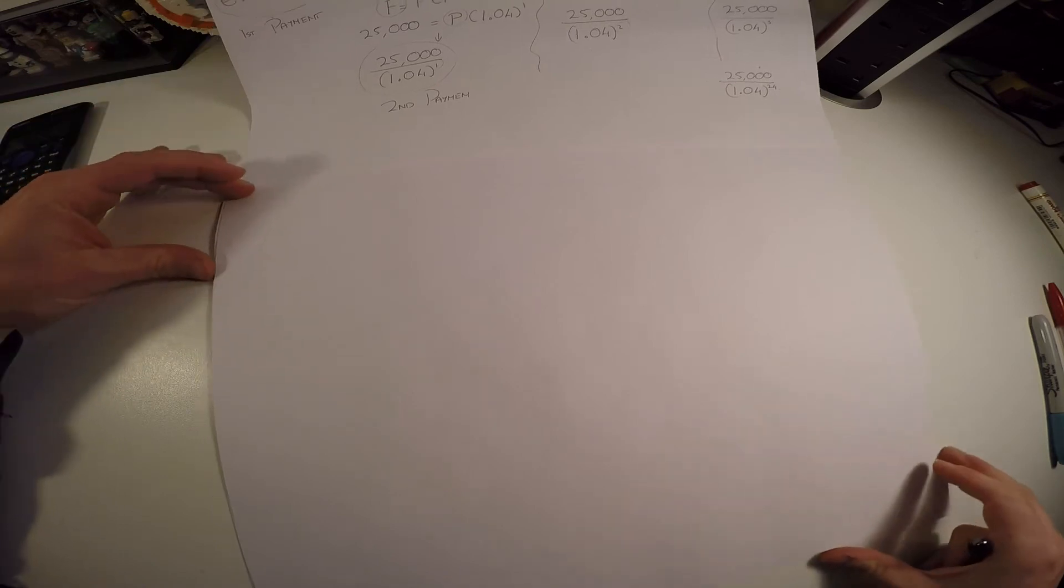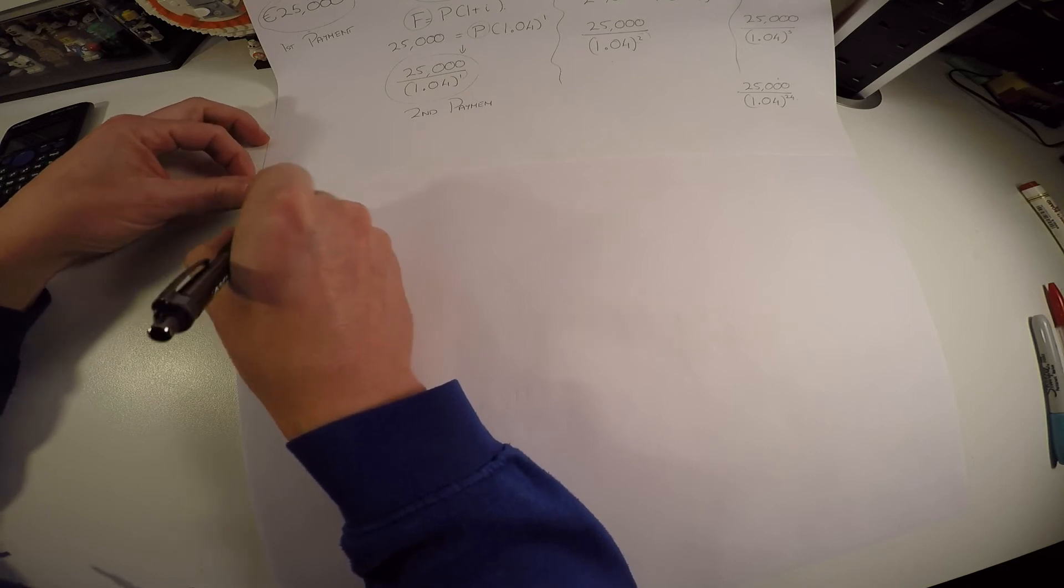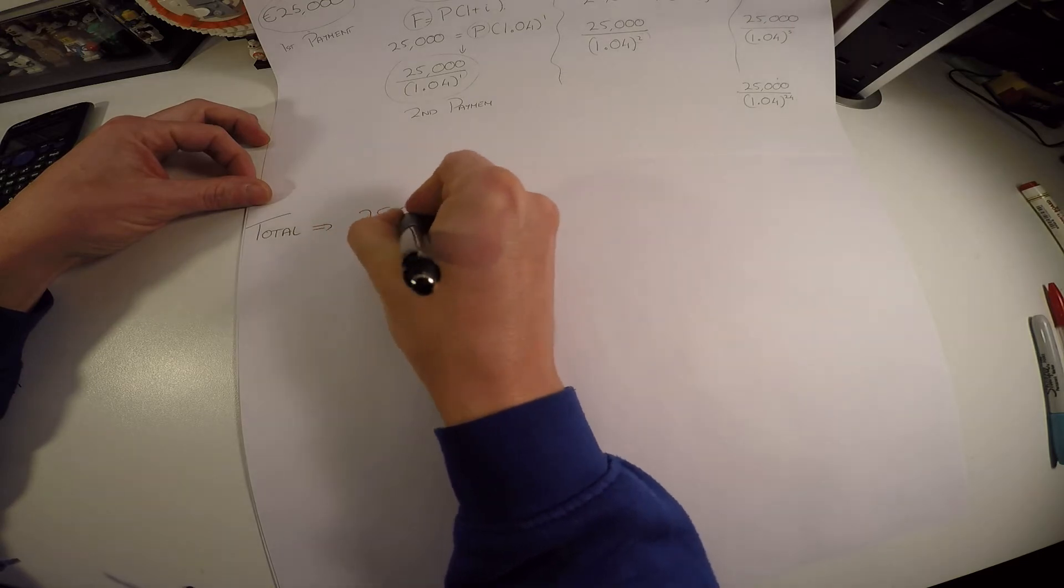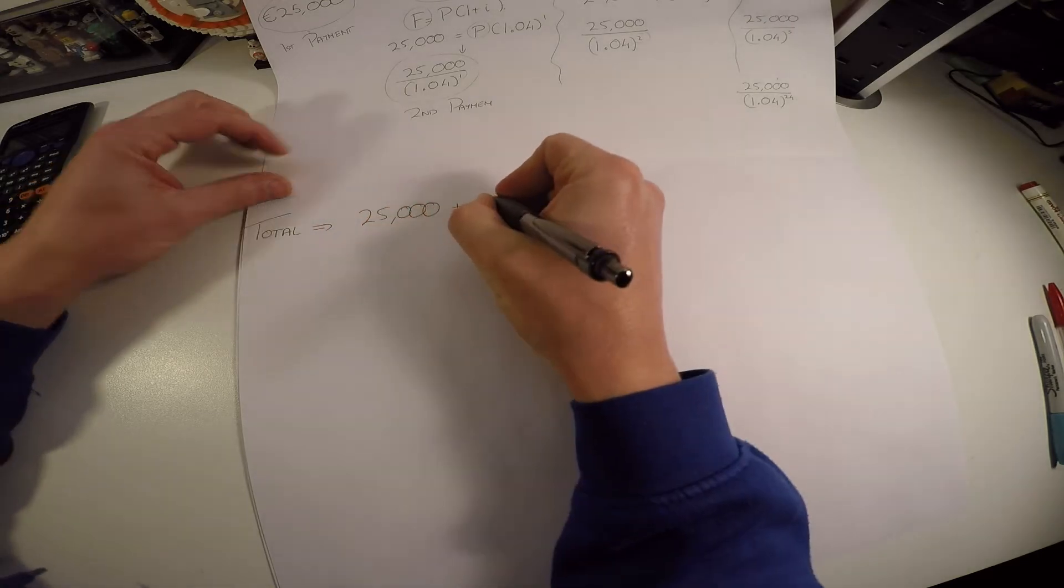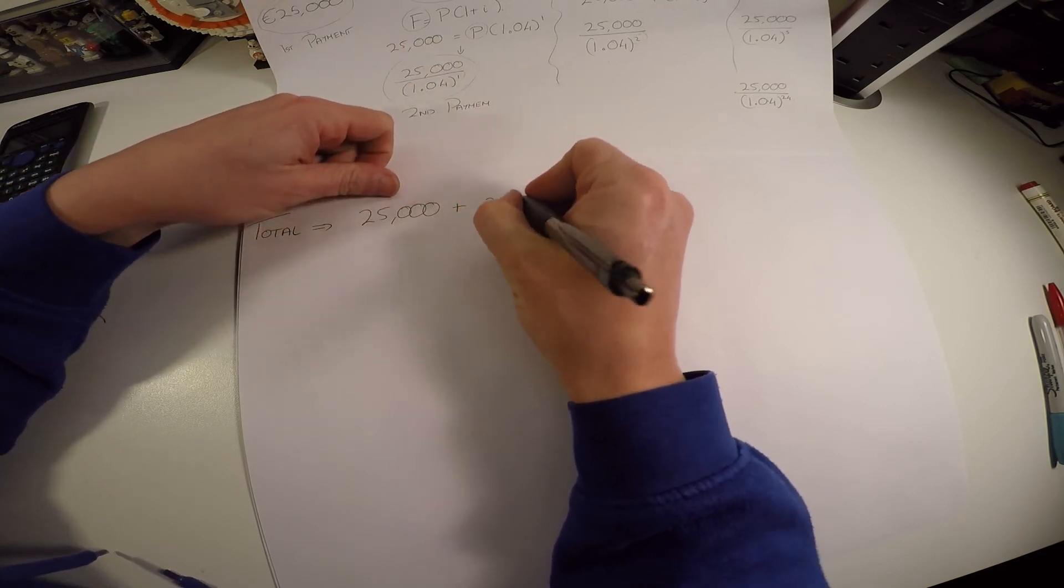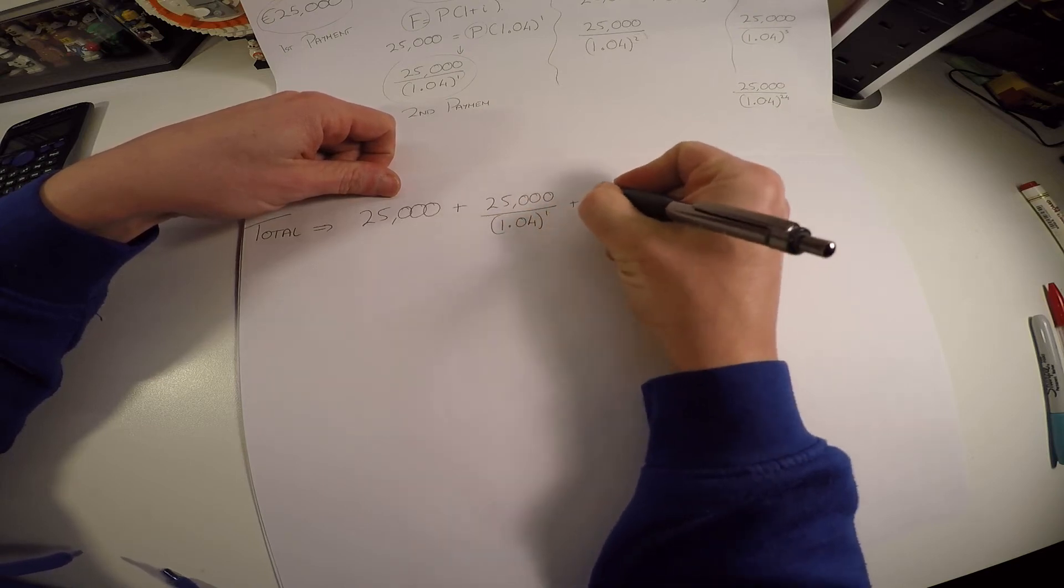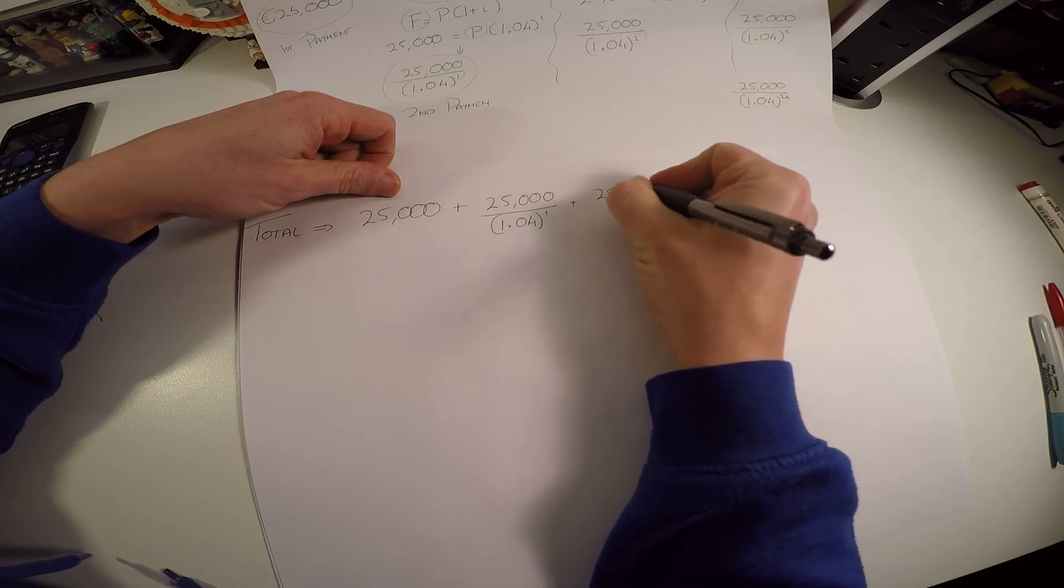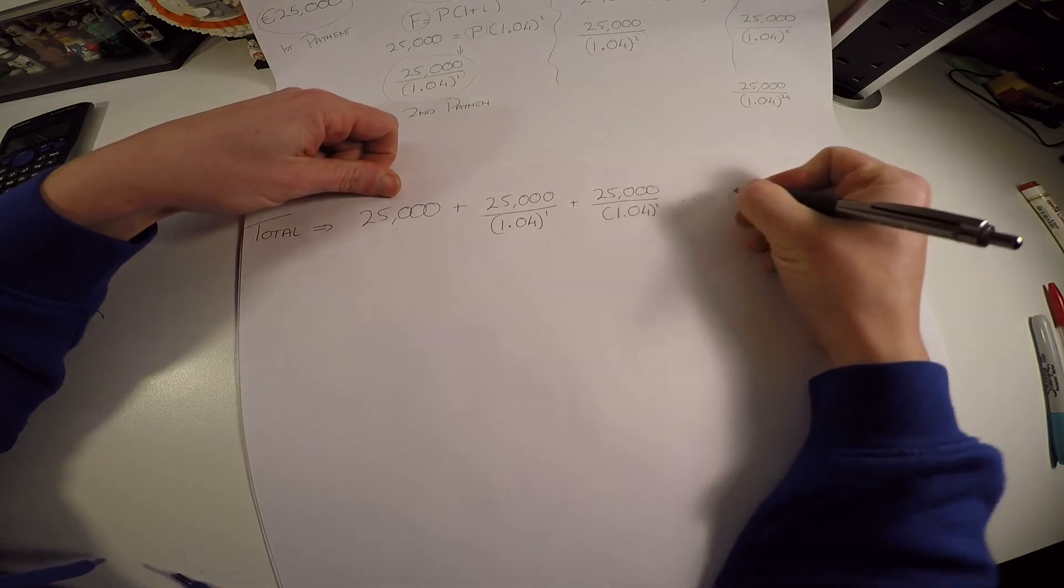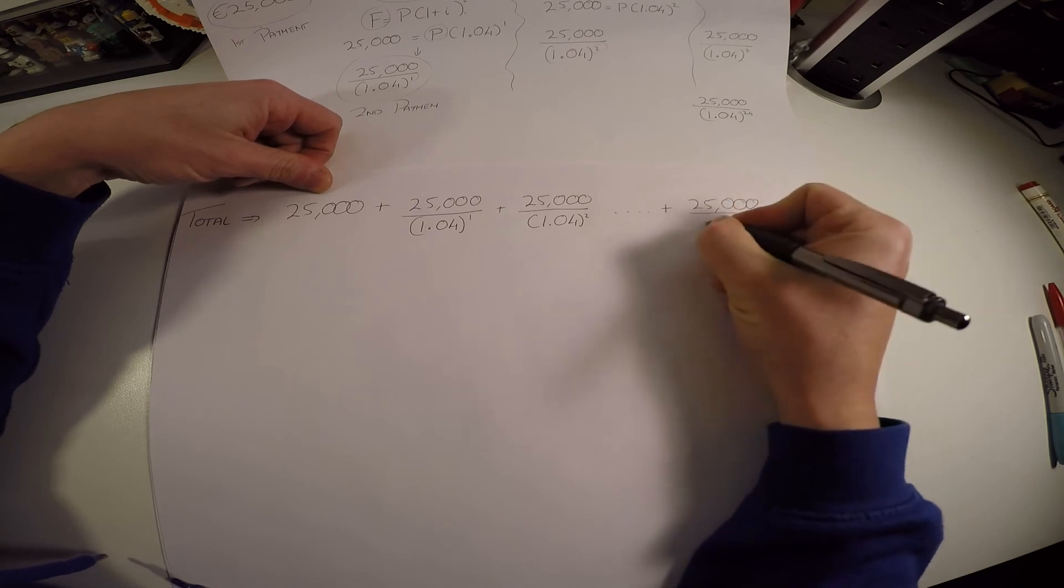Now let's write out some of these terms. So what do we actually have? We have the total fund needed. It's going to be the first 25,000 plus the second payment, which we know has a present value now of this much, and the next payment which has a present value now of this much, all the way up to the final payment which has a present value now of this.